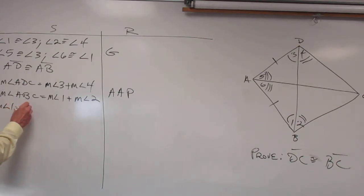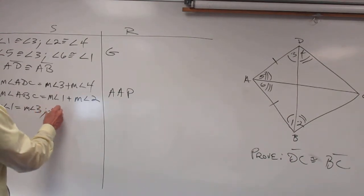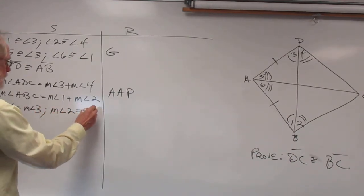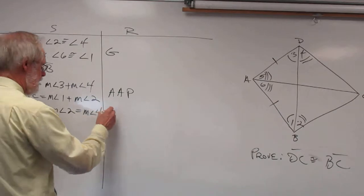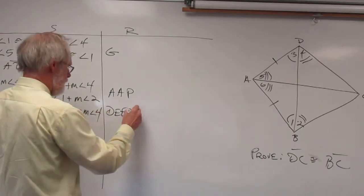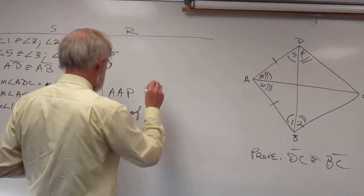Measure of angle 2 equals measure of angle 4. That's definition of congruent.